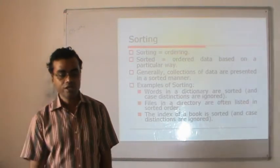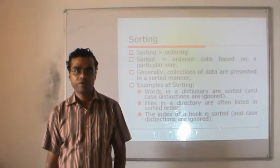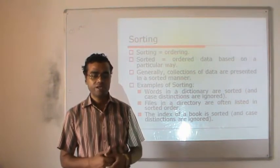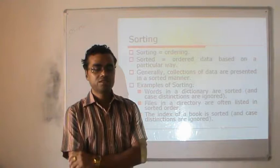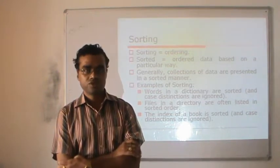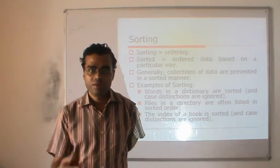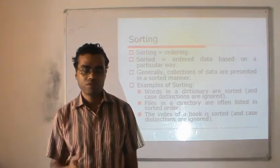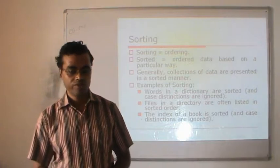Sorting is known as ordering. The sorted data is arranged in a particular order, so we say that a collection of data is presented in a sorted manner. Examples include a dictionary, where all words are in sorted order, a telephone directory where numbers are arranged by person name, and files in a directory listed in sorted order.